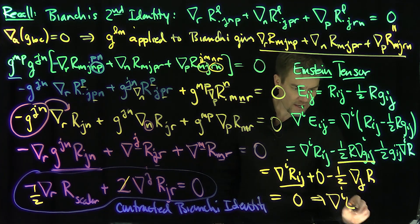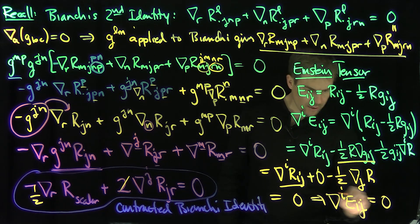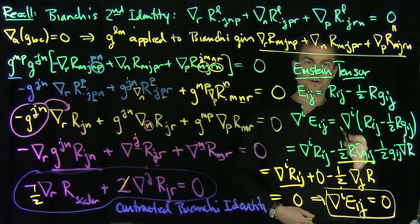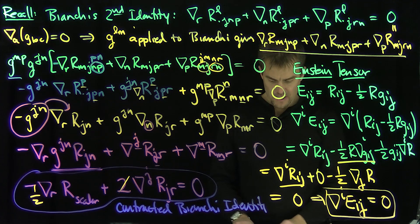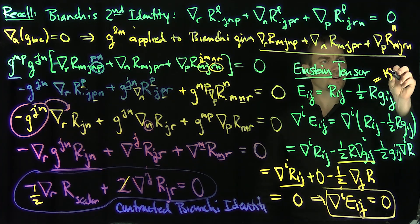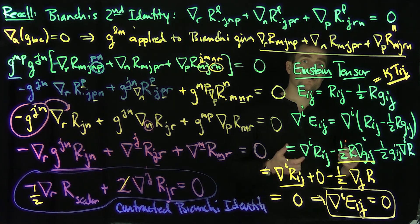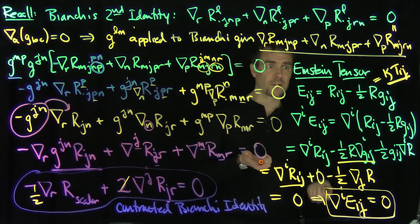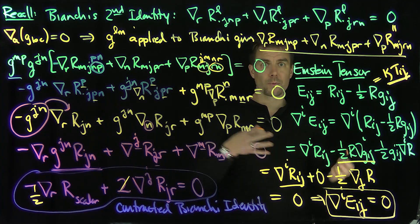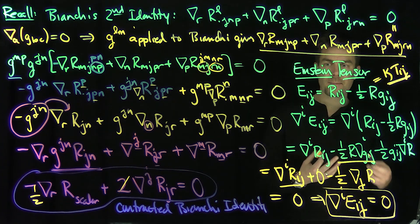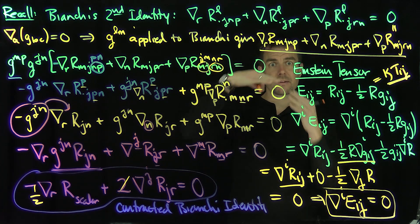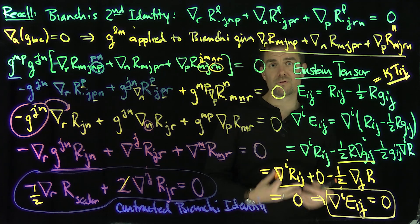By the contracted Bianchi identity, the traced covariant derivative of R_IJ equals one-half the J-gradient of the scalar curvature R. So this minus this equals zero — the covariant divergence of the Einstein tensor vanishes. This is essential for the Einstein field equations, which state that E_IJ equals kappa times T_IJ (the stress-energy tensor). By conservation of energy, the covariant derivative of T_IJ must be zero, confirming the Einstein field equations are consistent. The contracted Bianchi identity is thus an essential component in general relativity.